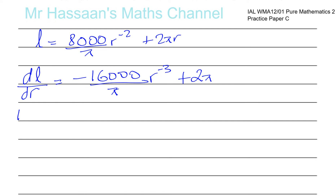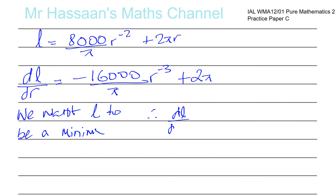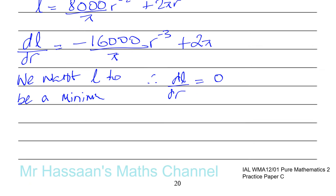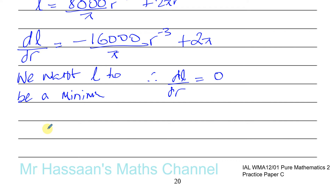To find the minimum L, we set dL/dR = 0. We find a minimum or maximum when the gradient of the function is 0. So: −16,000/(πR³) + 2π = 0, which gives 16,000/(πR³) = 2π.